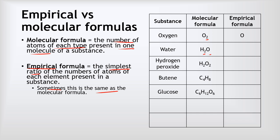Let's look at some examples. Oxygen: the molecular formula is O2, but the empirical formula is simply O — we've just removed the two. With water, the molecular and empirical formulas are the same: both H2O. Hydrogen peroxide starts as H2O2, but the empirical formula is just HO, because we've simplified the two-to-two ratio to a one-to-one ratio. Butene starts as C4H8, but we can simplify a four-to-eight ratio into a one-to-two ratio to give CH2. Glucose starts as C6H12O6, but we can simplify the six-to-twelve-to-six ratio to a one-to-two-to-one ratio, so the empirical formula becomes CH2O.